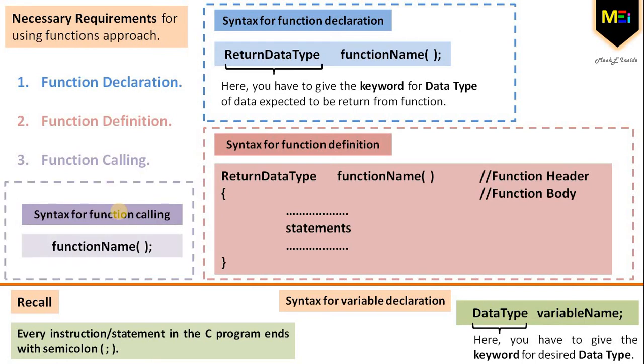Next is the function call. The function call statement invokes the function. When a function is invoked, the compiler jumps to the called function to execute the statements that are part of that function.